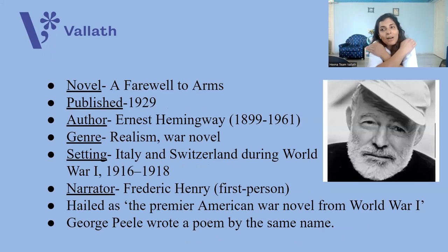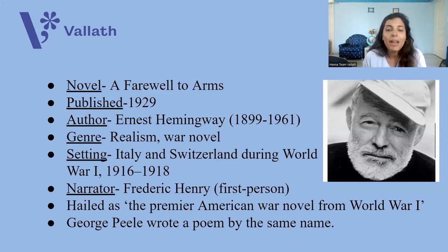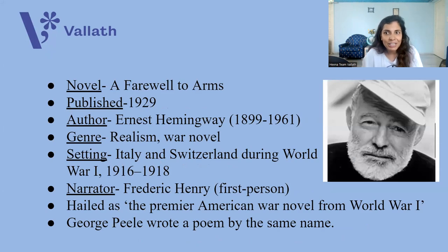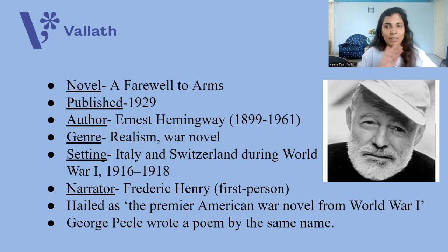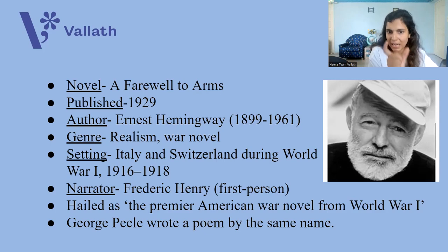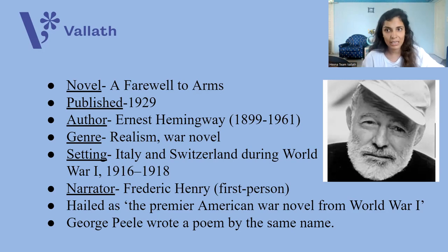A Farewell to Arms was published in the year 1929 by Ernest Hemingway, who lived from 1899 to 1961. The genre of A Farewell to Arms is realism — it depicts the reality and not fantasy of life, how everyone has to face the casualties of life, and of course it is a war novel. It depicts World War I. The setting is Italy and Switzerland during World War I, with a time span of 1916 to 1918, although the war went from 1914 to 1918. The narrator is first person.